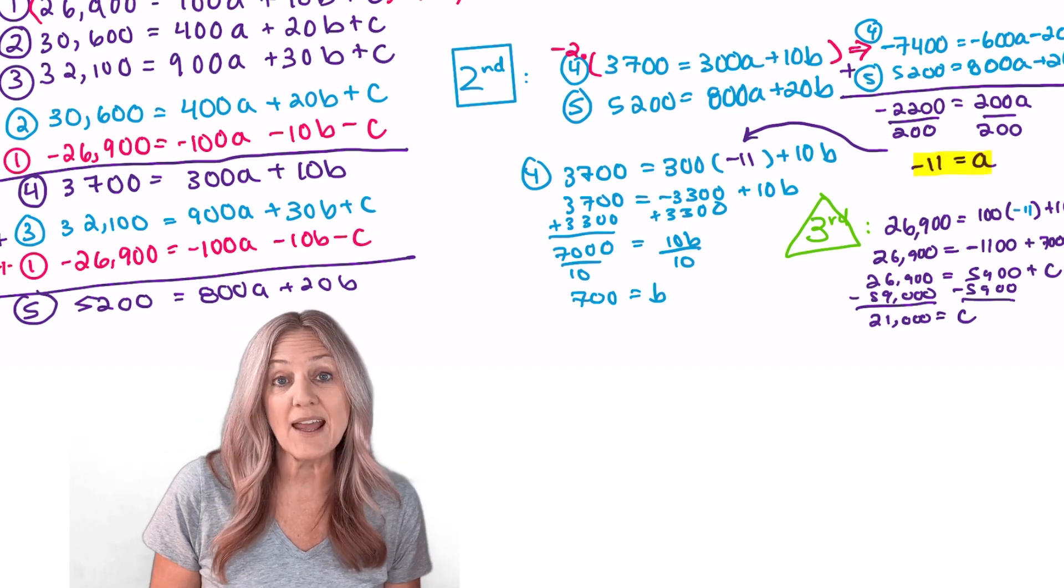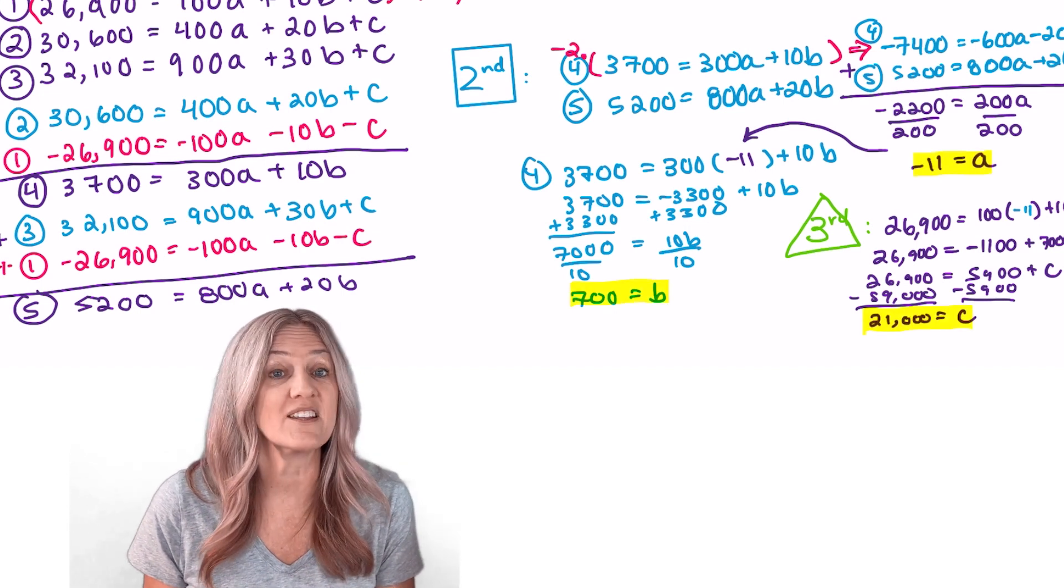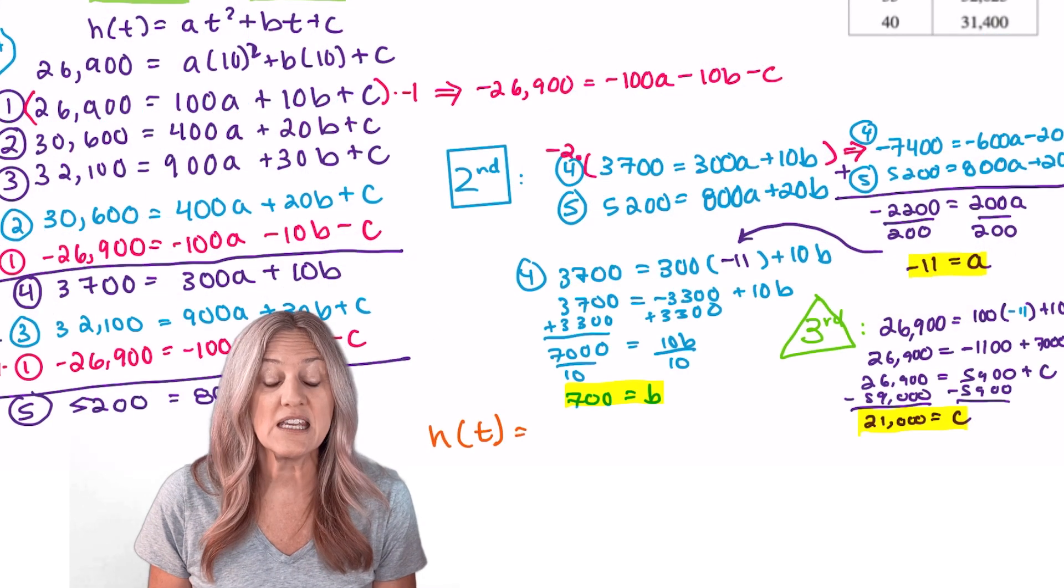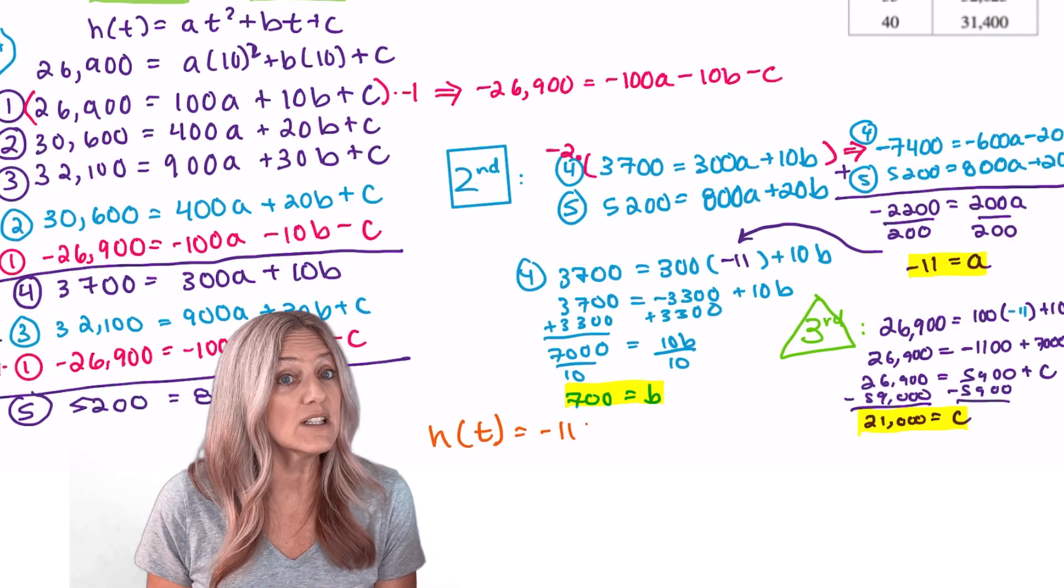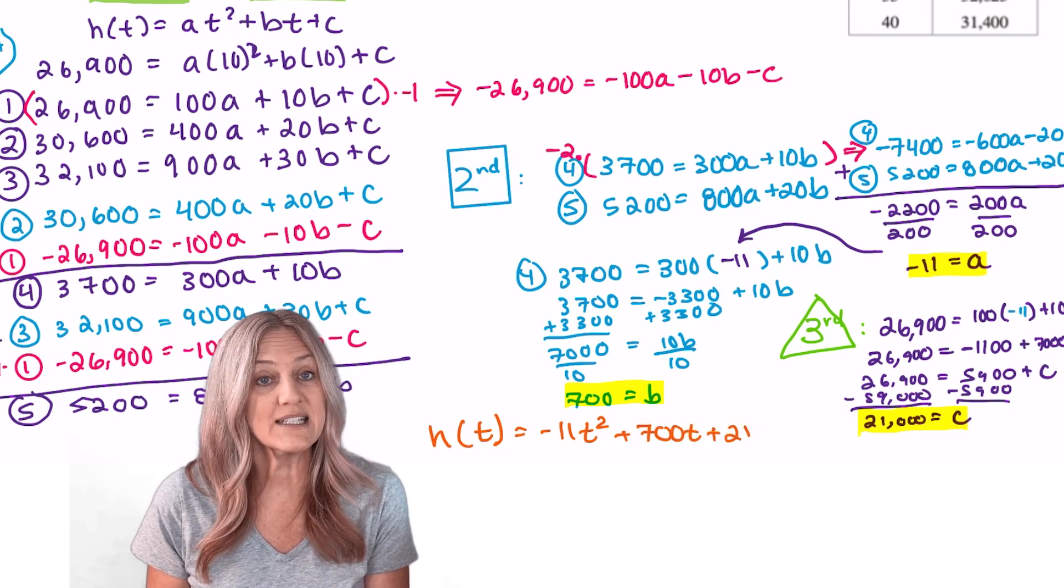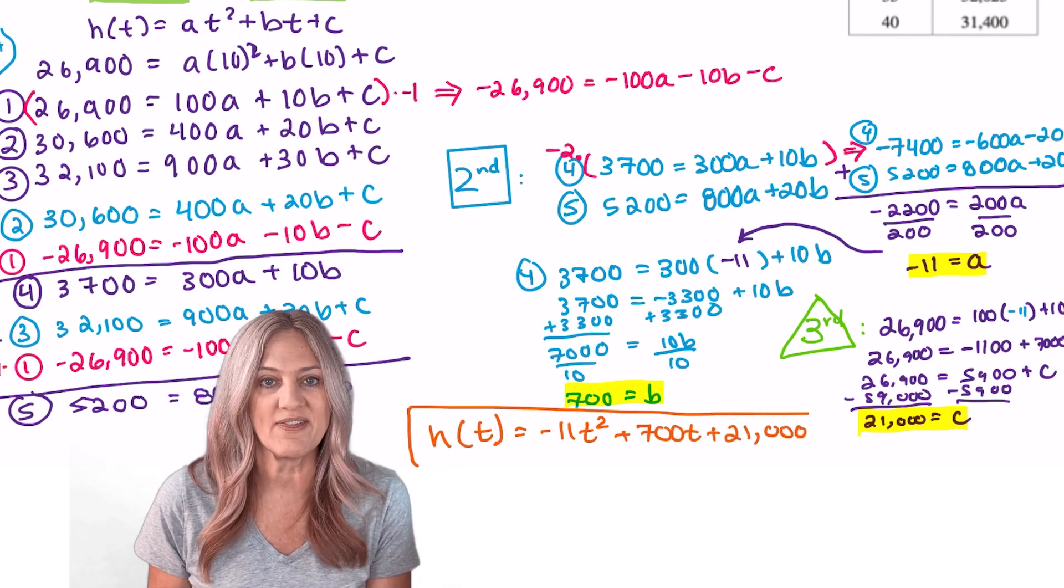Now that I have the values for a, b, and c I can go back and write the general form of the quadratic function. h(t) = -11t² + 700t + 21,000.